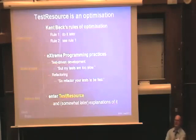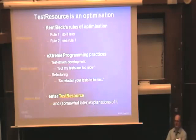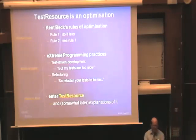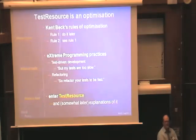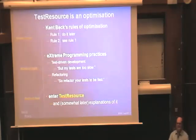The first thing about test resource is it is an optimization. If you don't care how fast your tests run, there is no reason you would ever have one. So about optimization - Kent Beck's rules of optimization are: do it later. And rule two: think about doing it later.